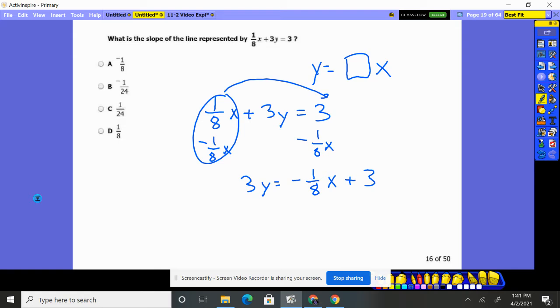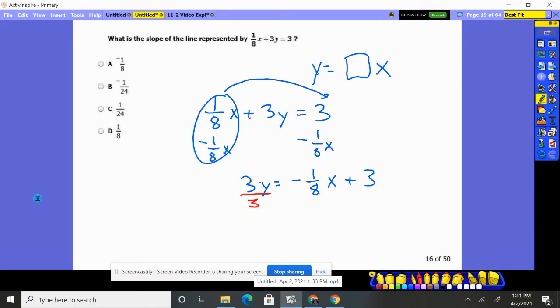Now, right now, it looks like it's 1/8. However, it's not a single Y yet. You're still multiplying by 3. You've got to get rid of that by dividing by 3.